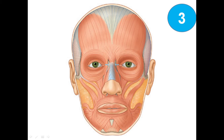The next picture — we can see the frontal view of the muscles of the face. First of all, this big one we can see is the frontalis muscle, which is the frontal belly of the occipitofrontalis muscle.